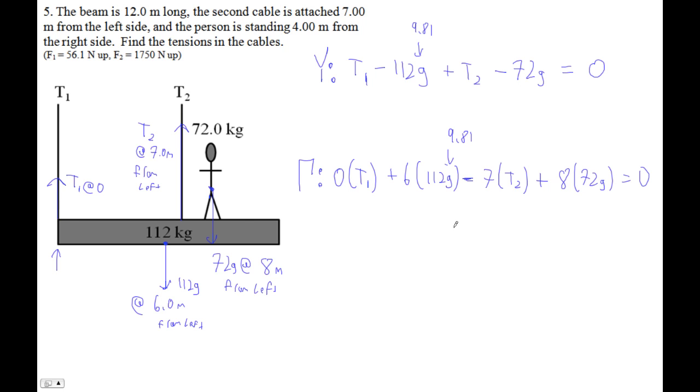Now this is solvable, so let me just solve this thing. I'm going to go 6 times 112 times 9.81, plus 8 times 72 times 9.81. And there's that answer. And then I'm going to divide that by 7. Take out T2. 1748.98 Newtons, which is roughly 1750. And the fact that it's positive means that it's up. Of course, these have to be positive because of tensions.